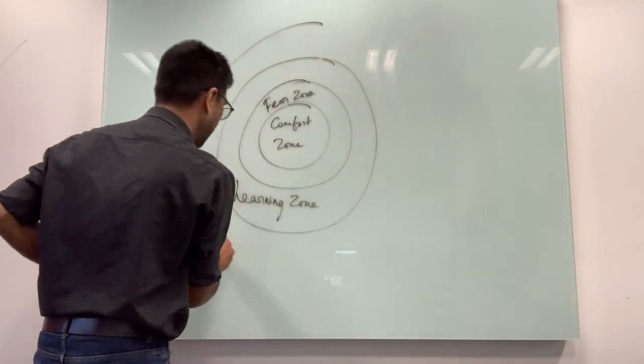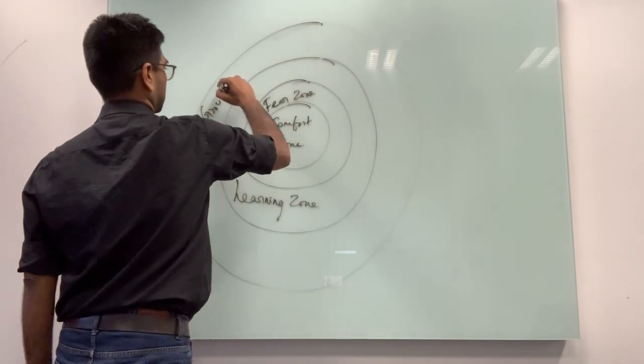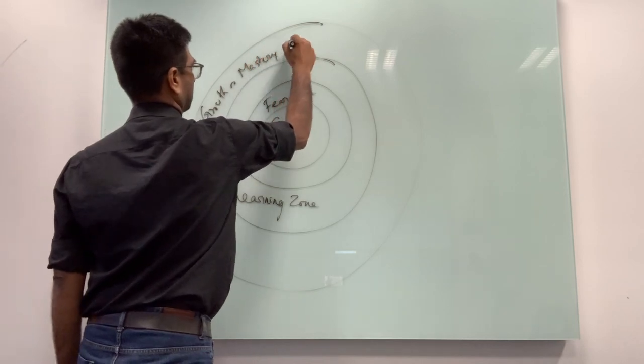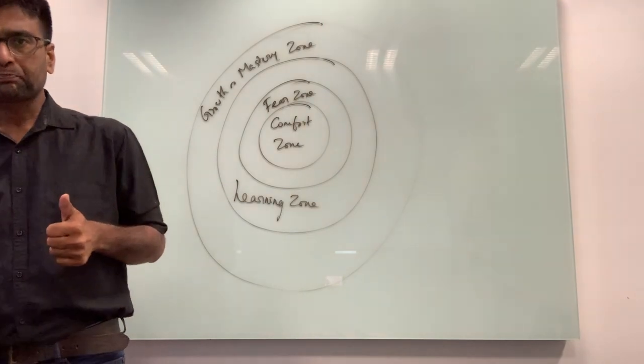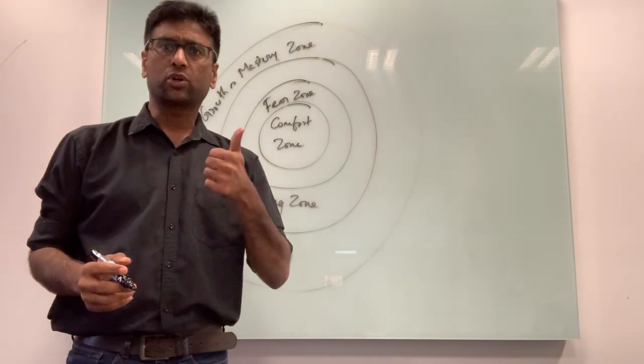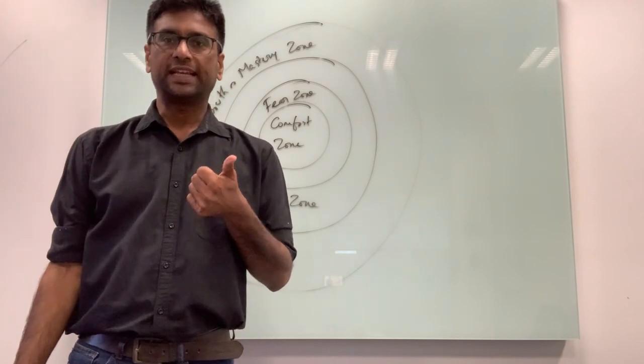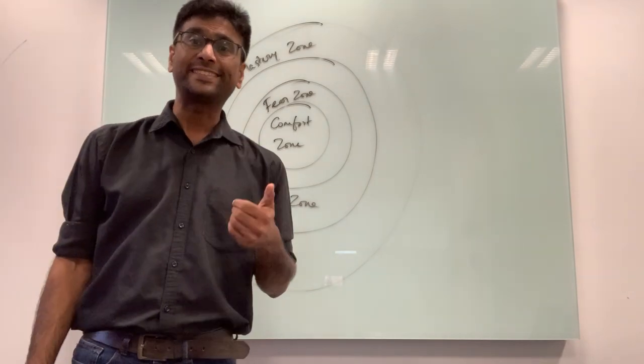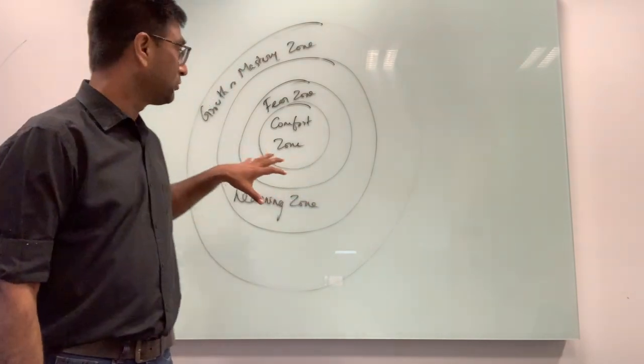This is what I call the growth zone or the mastery zone. This is where you actually do really well. The skills that you have acquired can actually enable you to master something. This is where you actually start teaching some of the skills that you have acquired.